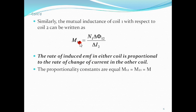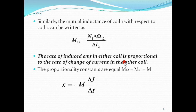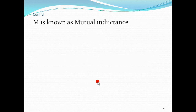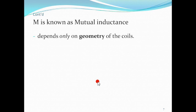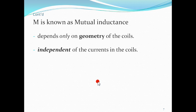Whether we use M12 or M21, mutual inductance of one with respect to two or two with respect to one, the rate of change of flux is directly proportional to the current in the other coil. By mutual inductance, the induced electromotive force equals M times the rate of change of current in the primary, delta I over delta t. M is known as mutual inductance, and importantly it depends only on the geometry of the coils — not on any other quantity.